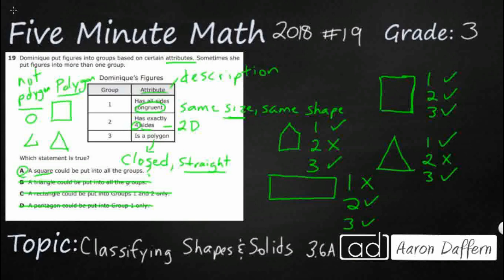So our answer is going to be A. A square could be put into all the groups.